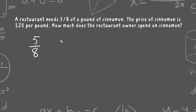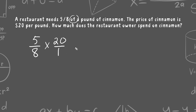Here is how we solve this problem. Because the problem says the restaurant needs five-eighths of a pound, the word 'of' indicates multiplication. It is twenty dollars per pound, so we're going to take five-eighths of that twenty dollars, and that is going to give us how much they are paying for the cinnamon.